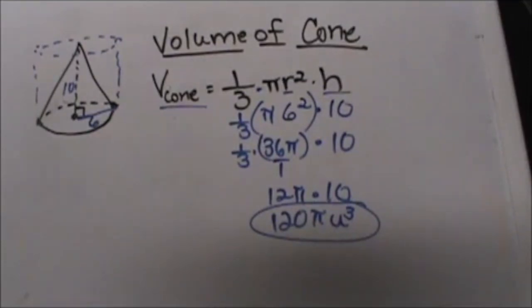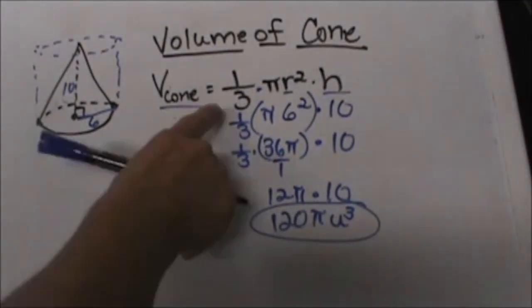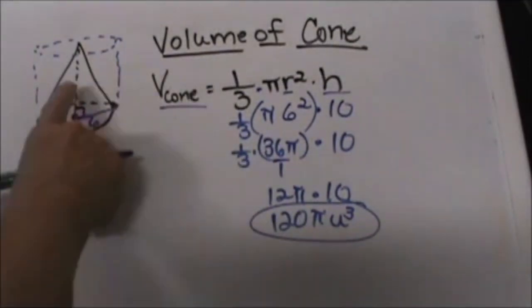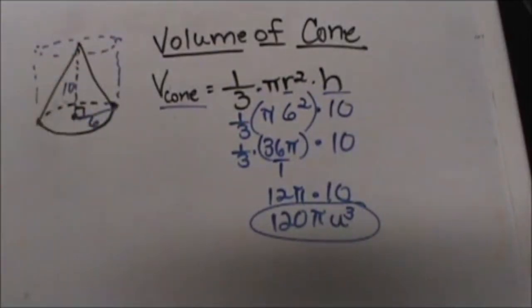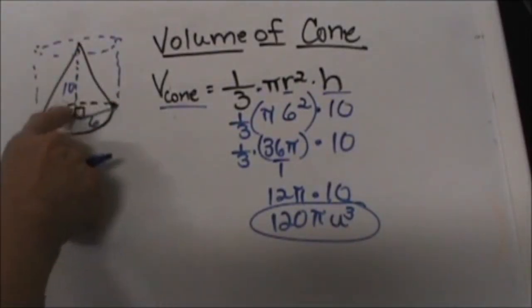And that is how you find the volume of a cone and it takes three cones to fill up a cylinder with the same radius and the same height.